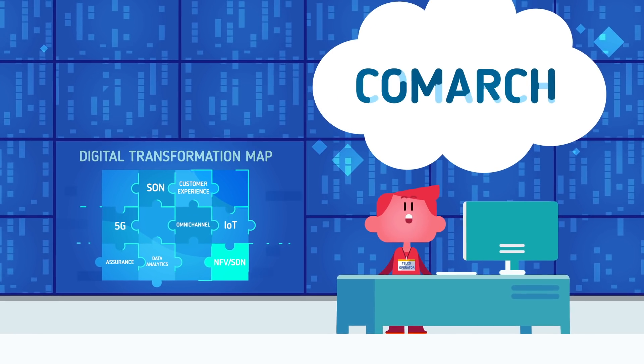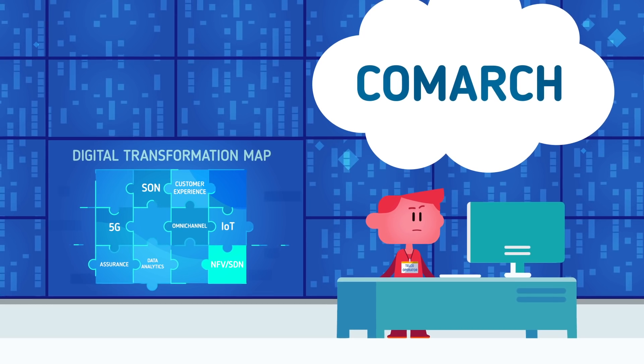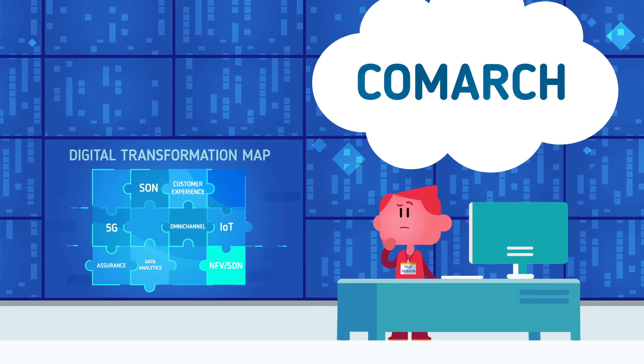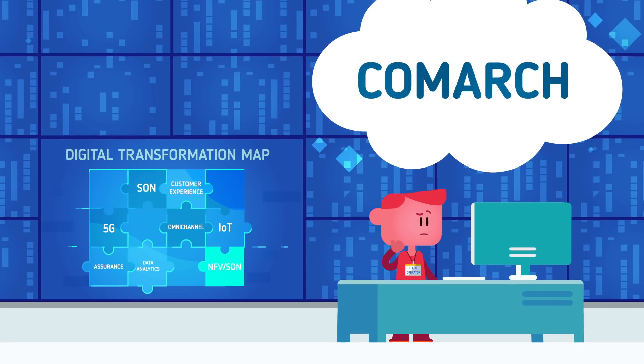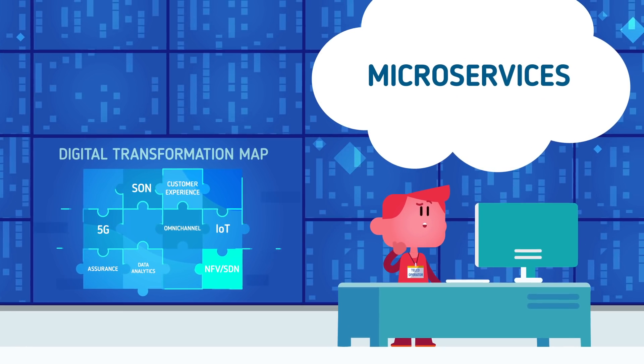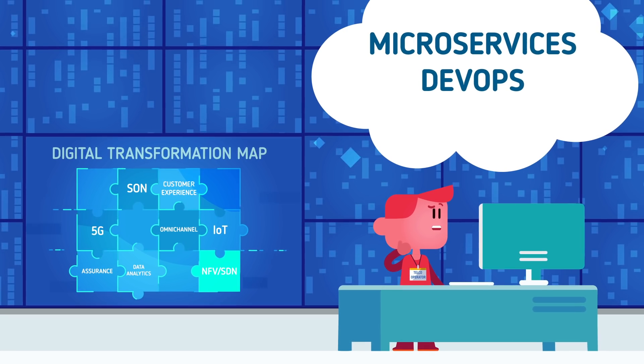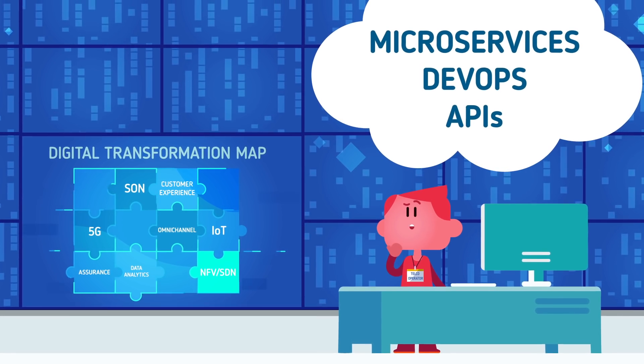What's inevitable is Comark's cloud-native approach. Within cloud-native architecture, you can easily implement and use microservices, DevOps methodologies, and open APIs.